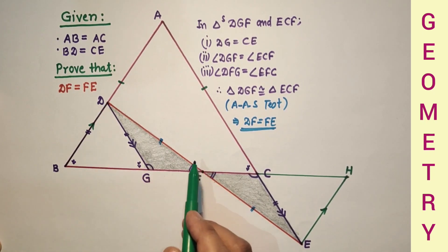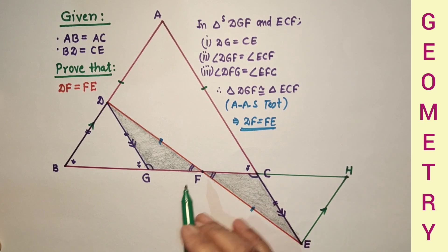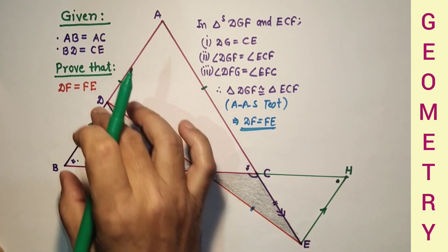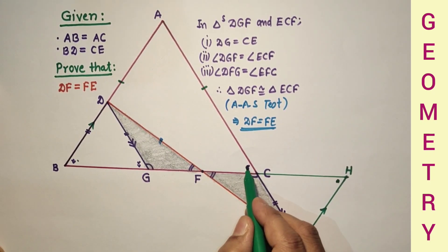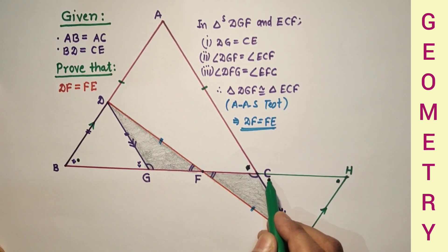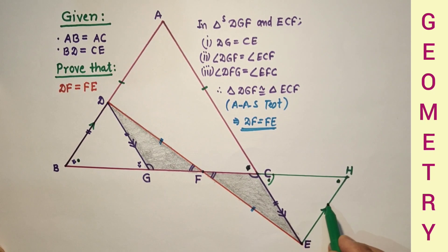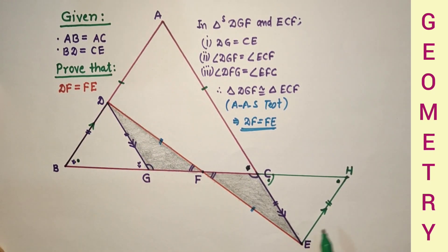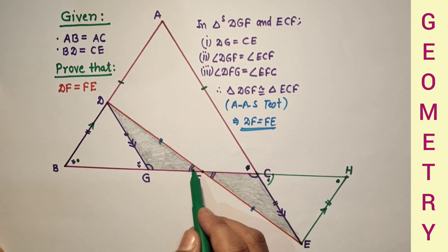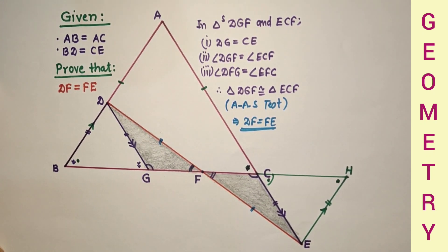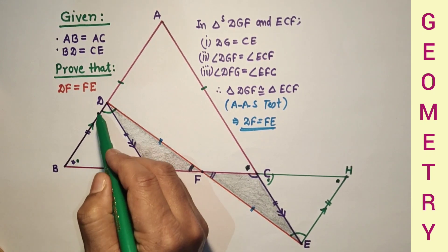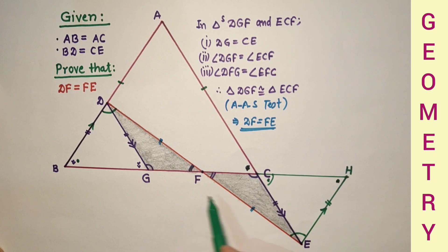We can now prove that triangles DBF and EHF are congruent. Taking EH parallel to BA: this angle equals this angle, and this angle equals this angle — these two are vertically opposite angles. We found that DB equals HE, since CE equals EH and CE equals BD. This angle equals this angle, and this full angle equals this full angle. By angle-side-angle, these two triangles are congruent, and hence DF is equal to FE — the corresponding sides are equal.